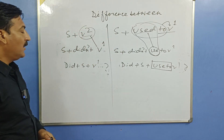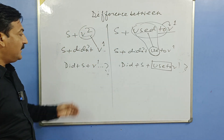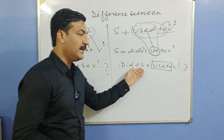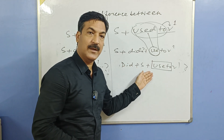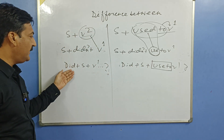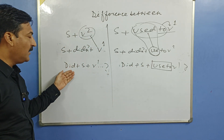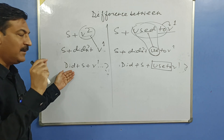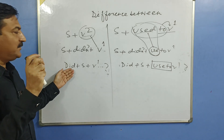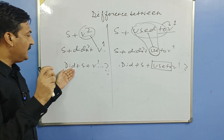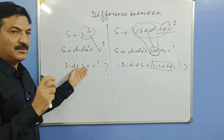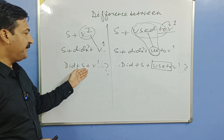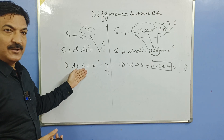Agar mein kahoon: 'kya woh aaya tha?' — did he come? 'Kya woh aata tha?' — did he use to come? 'Kya tum nahi gaye the?' — didn't you go? Ek baat jaano: 'kya aur nahi' dono tarah se bol sakte hain — didn't you go, ya did you not go. Lekin bolne mein 'didn't you go' zyada accha lagta hai.